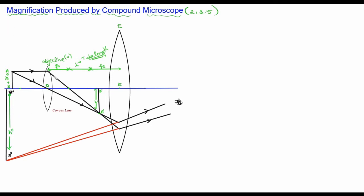From here to here represents the height of the final image produced. There is one angle formed here that I will represent as beta. These angles are equal because they are called vertically opposite angles.